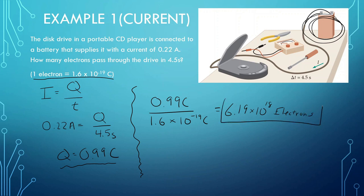That's our answer there. That's a lot of electrons, and it's manageable because electrons are so small — so many of them have to pass through in order to power up the CD player.